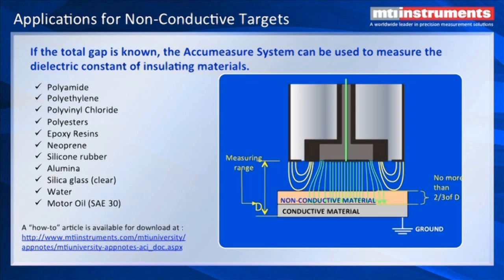MTI can also measure non-conductive targets. There's a dielectric constant associated with dielectric targets, and if you know that constant, you can insert the material in a gap between a probe at a fixed height above a conducting metal target and measure the thickness of the non-conductive material. We have formulas and techniques on our website for determining the dielectric constant of your material and how to set up your probes for this measurement.